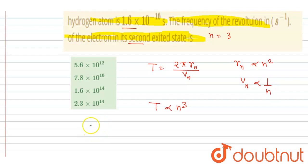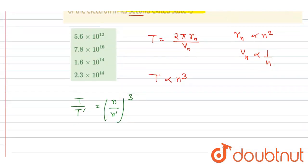So if I write down T by T dash, it will be n by n dash whole cube. And we want 1 by T dash, we want the frequency. The changed frequency will be what? Changed frequency will be equals to 1 by T dash.